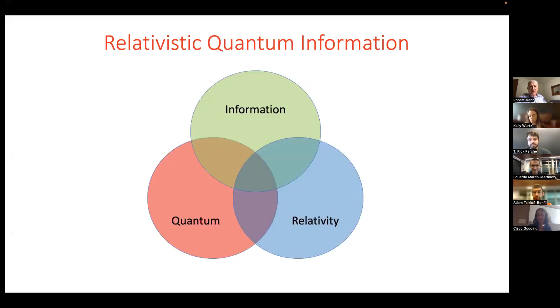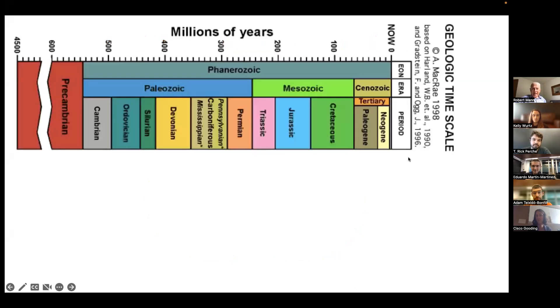Relativistic quantum information is really a subject that involves these three areas of science: quantum physics, relativity, and information. We're interested in the overlap between these, particularly the middle area, but often these other areas as well. How do you present a scientific subject historically?